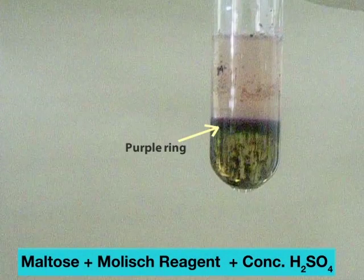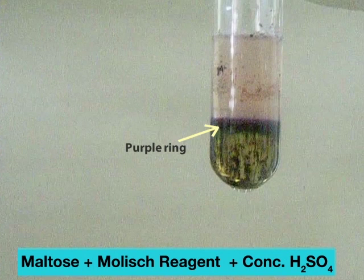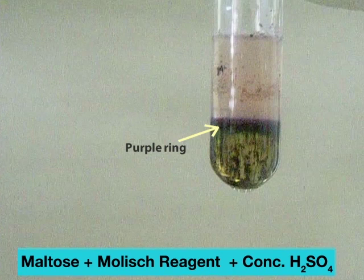A purple coloration, seen as a ring at the interface between the acid and the maltose and Molisch reagent, indicates the presence of a carbohydrate.